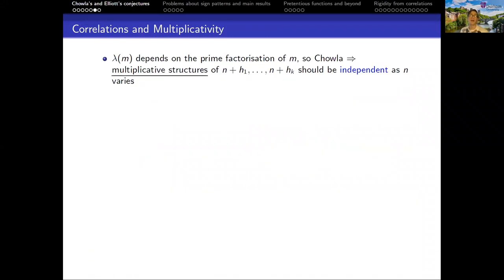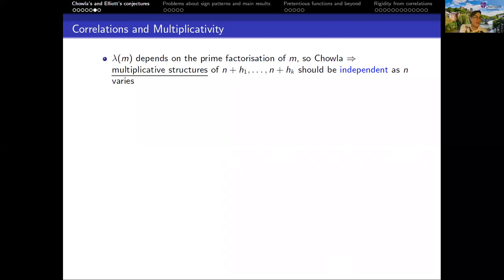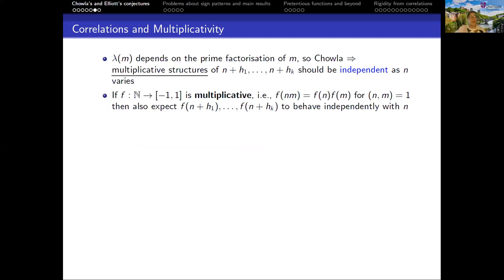We can interpret these two versions of Chowla's conjecture as saying that lambda(m), which depends on the prime factorization of m and therefore manifests information about the multiplicative structure of n+h_1, n+h_2, ..., n+h_k, suggests these multiplicative structures — these factorizations — should be independent at some level as n varies. So we might expect that any other function which interacts predictably with products should also manifest this sort of independence. For example, if we take a multiplicative function — a function that splits products whenever the factors are coprime — it should also have this independence property for its various values.